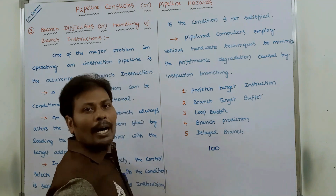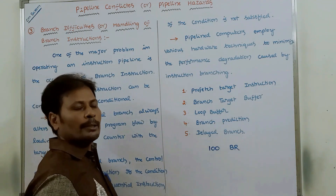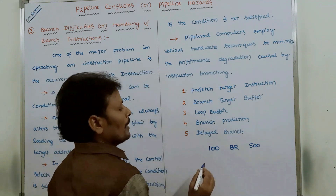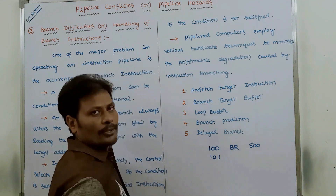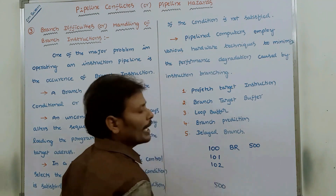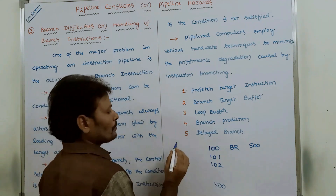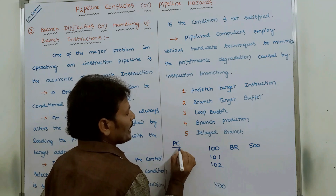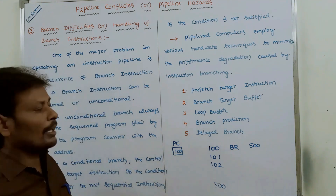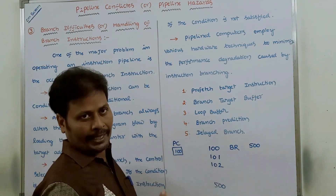Suppose we have a branch instruction at address 100. The instruction name is BR, which stands for branch instruction, and it takes only one address field. There is an instruction at address 101, another at 102, and the target is at address 500. When executing this branch instruction, the PC initially contains address 100.